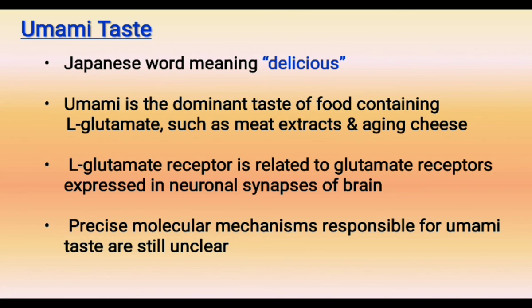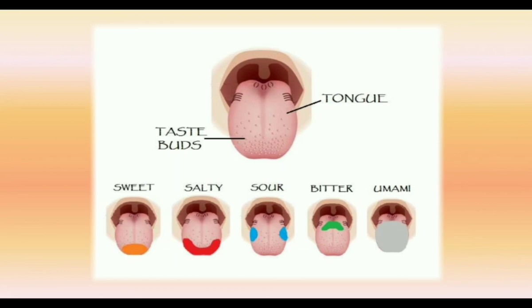Our tongue has different regions for each primary taste sensation. The sweetness is sensed at the tip of the tongue. The tip is also laterally extended with salty taste. The two lateral sides detect sour taste, while bitter taste is sensed in the middle-back area.